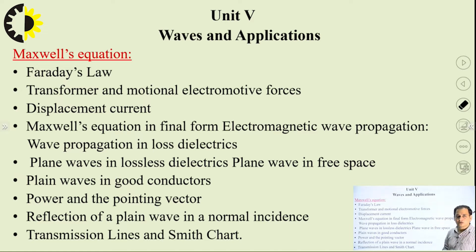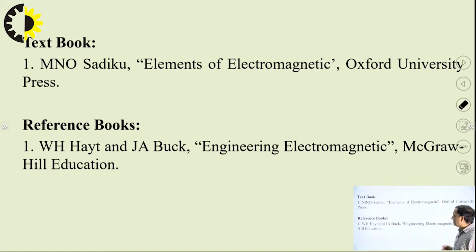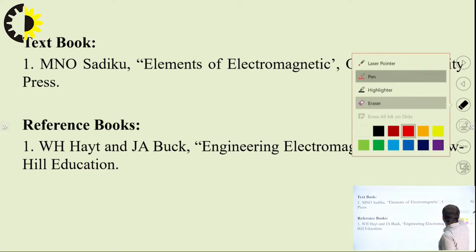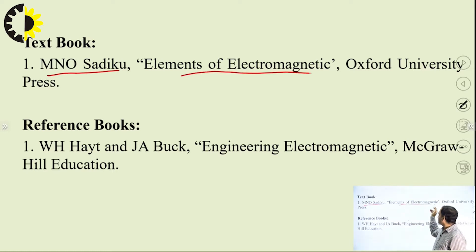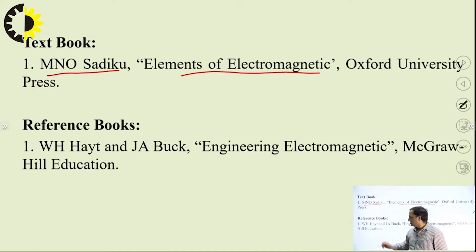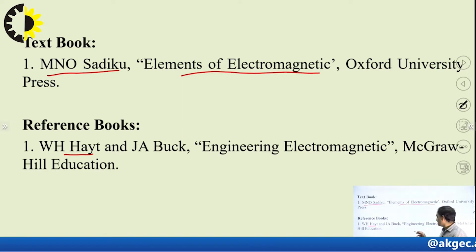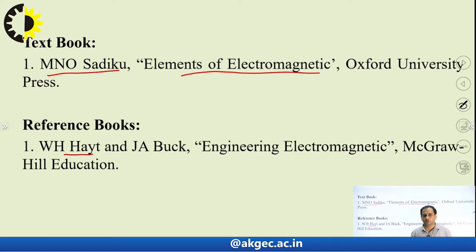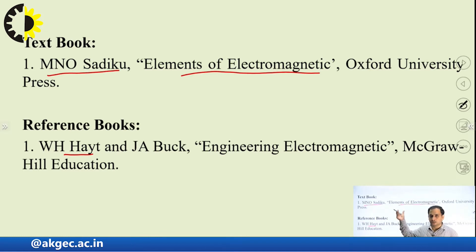As I have discussed all the units we will cover in our syllabus, the book I will refer is Sadiku's Elements of Electromagnetics, published by Oxford University Press. Another reference book is Hayt's Engineering Electromagnetics, published by Tata McGraw-Hill Education. Most of the content I will cover through the Sadiku book, but I will take more examples; I suggest you refer to at least one book — Elements of Electromagnetics.